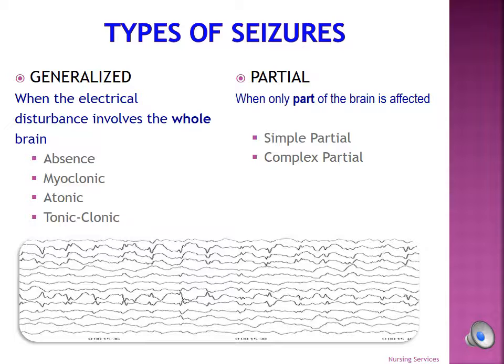Generalized seizures affect the entire brain, while partial seizures only affect a specific area of the brain. Generalized seizures include absence, myoclonic, atonic or drop seizures, and tonic-clonic seizures, which are also known as grand mal seizures. Let's first take a look at generalized seizures.